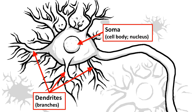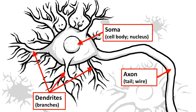Once enough information is collected in the soma, we will see an electrical signal — an electrical impulse — be sent down the neuron's tail-looking structure, which also kind of looks like a wire. The term we use for it is the axon. The axon is this long narrow fiber that carries that electrical signal from the soma to basically the junction with the next neuron.